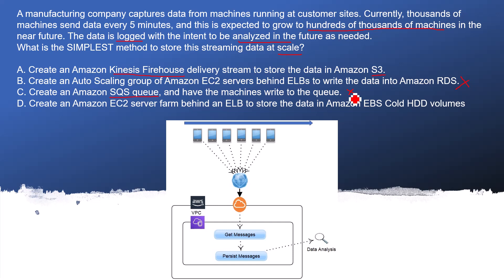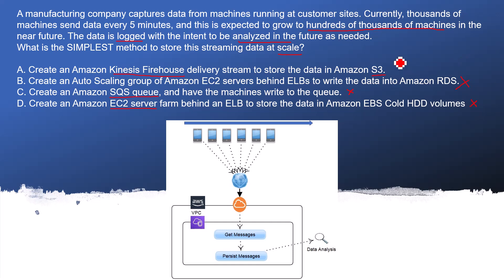Option D: Create an Amazon EC2 server farm behind an ELB to store the data in Amazon EBS Cold HDD volumes. Yes, you can save data to Cold HDD volumes, but S3 is much cheaper and the easiest way to save data. Involving many EC2 servers is very expensive. Make sure you are not choosing any option which is expensive and does not match the criteria. So all three of B, C, and D are wrong answers, and the correct answer is Kinesis Firehose.